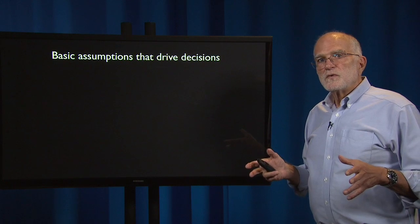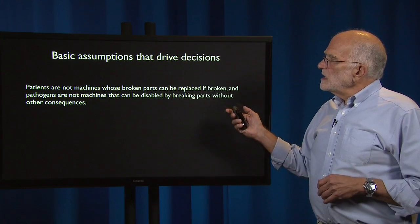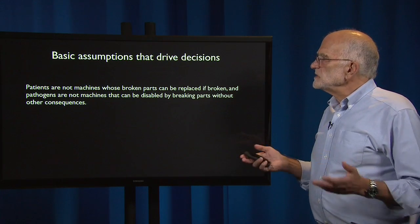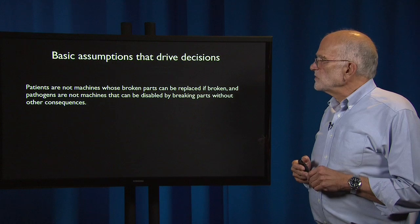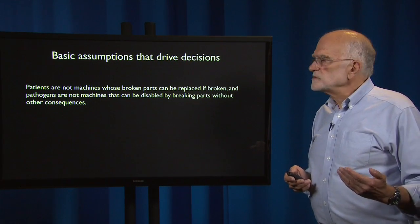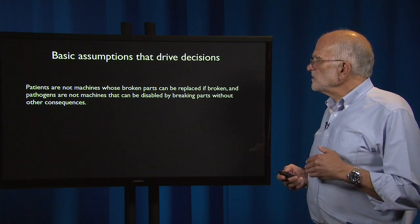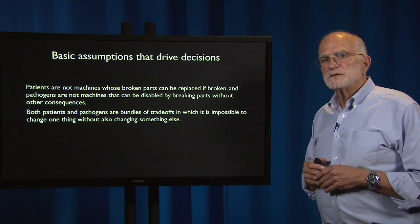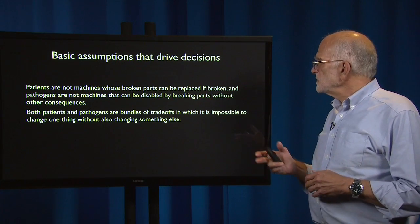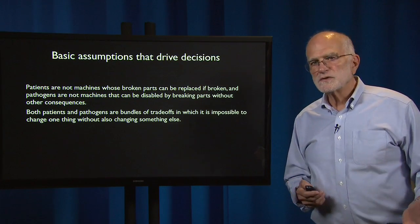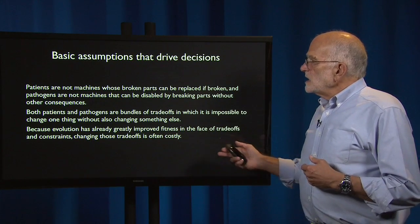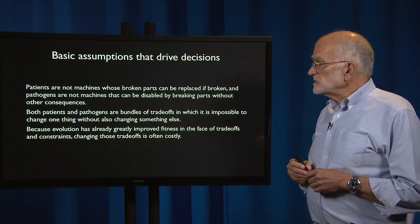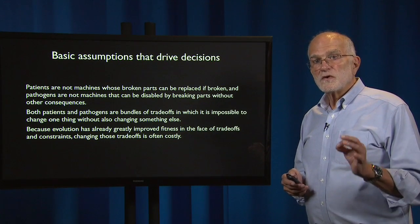The two ways of looking at the world make different basic assumptions. Evolutionary medicine looks at patients not as machines whose broken parts can be replaced, and it doesn't look at pathogens as machines that can be disabled by breaking their parts without having other consequences. Both patients and pathogens are bundles of trade-offs in which it's impossible to change one thing without also changing something else. Because evolution has already greatly improved fitness in the face of trade-offs and constraints, changing those trade-offs is often costly.